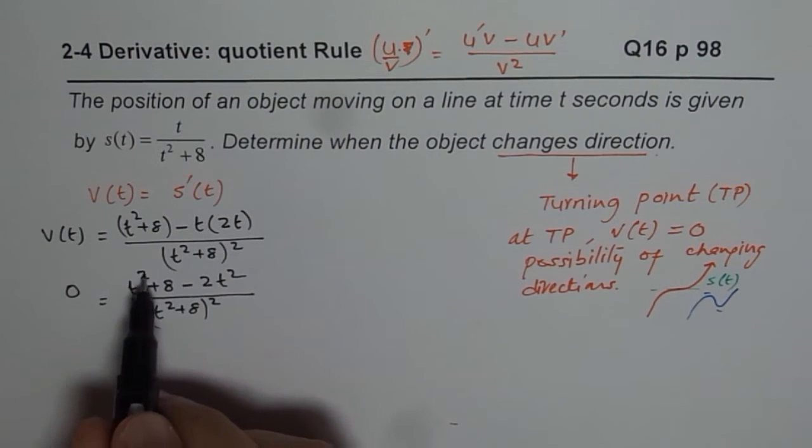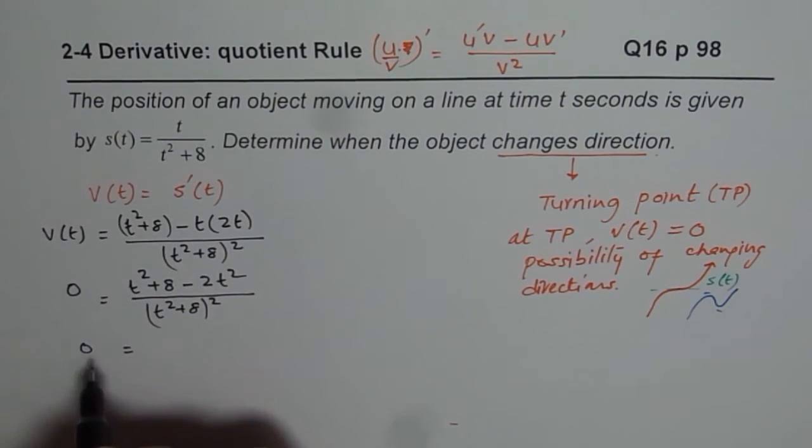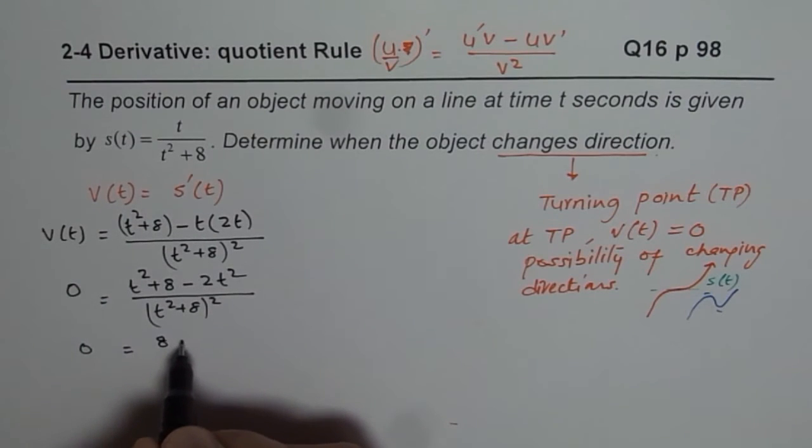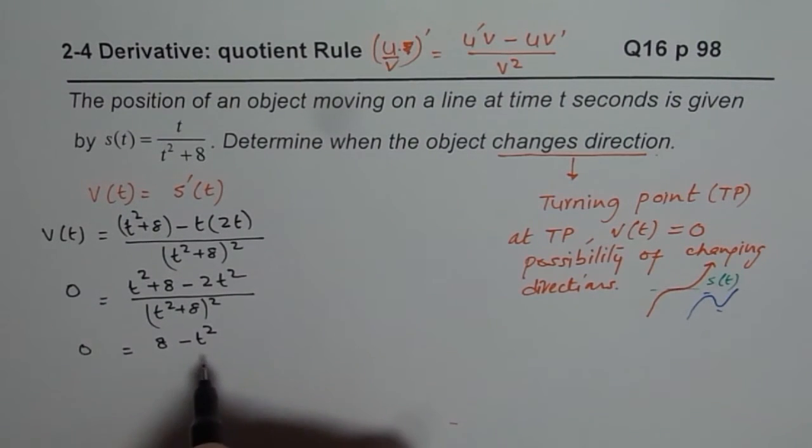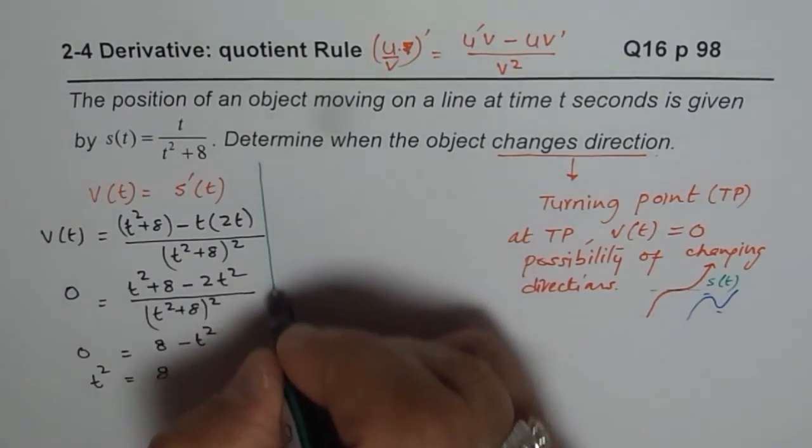So, we will solve for this, t squared minus 2t squared, let me write this as 0 equals to 8 minus t squared, or bringing t here, and then square rooting, or we could say t squared equals to 8.